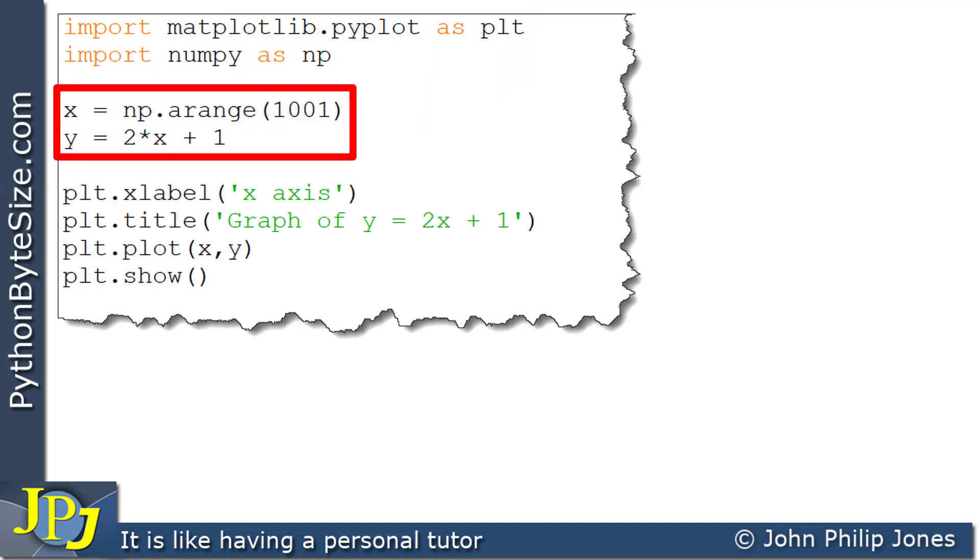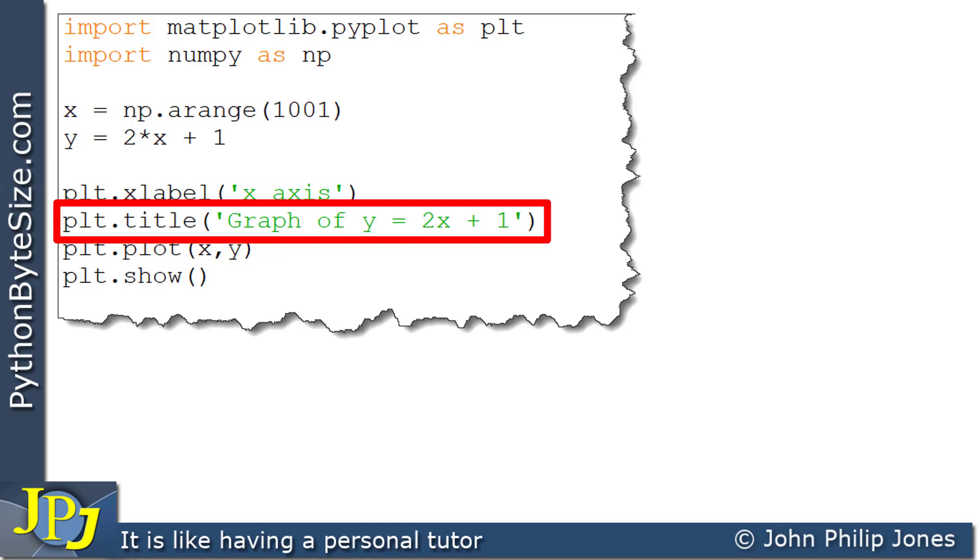These two lines are responsible for setting up the content of the numpy arrays. Here, this is responsible for labeling the x-axis with the string. And this one is responsible for the title of the graph.